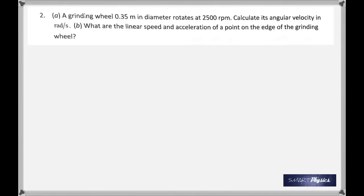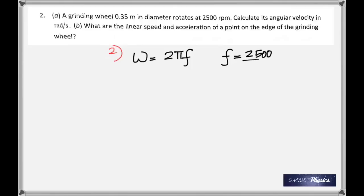Angular velocity is the total angle covered divided by time. The angle moved through in one rotation is 2π radians. Therefore, multiply 2π by the number of rotations per second. The number of rotations per second is called frequency. So find the frequency by dividing 2,500 by 60, and angular velocity is 2π times frequency.